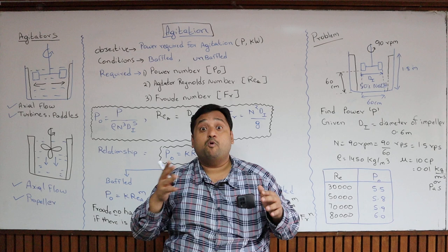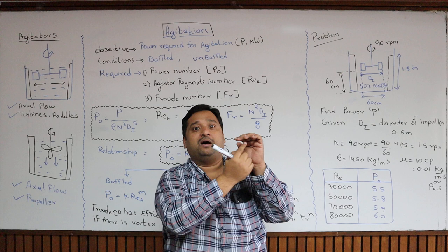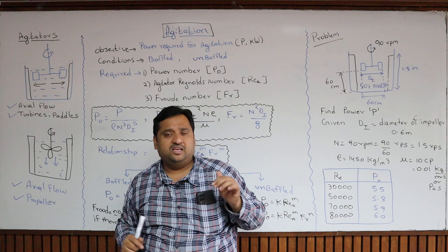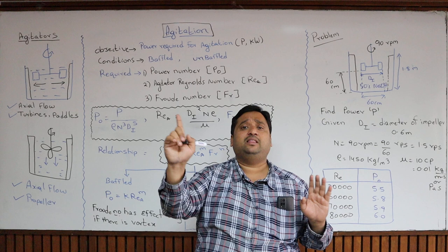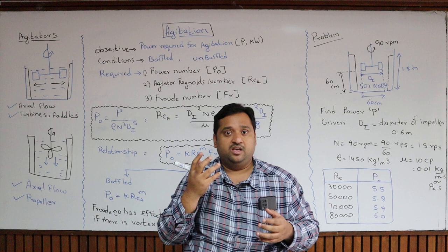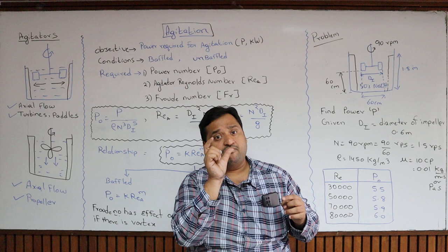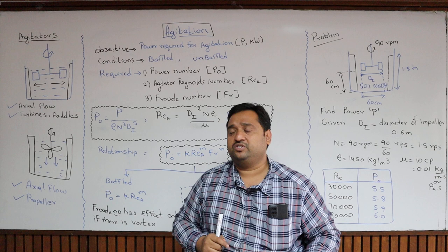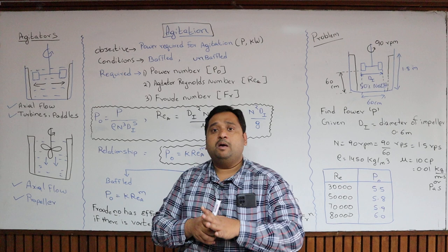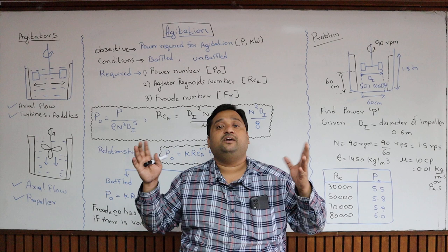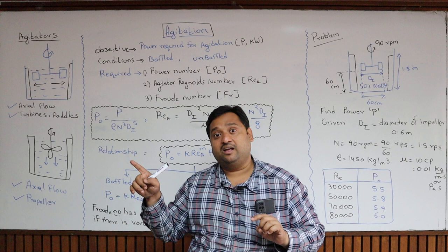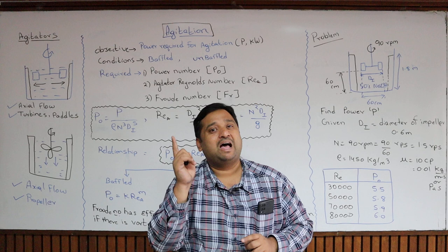In agitators, there can be baffles placed at the sides of the tank to promote mixing. The rotating fluid hits the baffle and returns to the impeller — these are called baffled tanks. Systems without baffles are called unbaffled tanks; in these, the liquid continuously rotates and forms a whirlpool, technically called vortex formation. The power required for a baffled tank and an unbaffled tank are different — typically the power required in an unbaffled tank is higher.